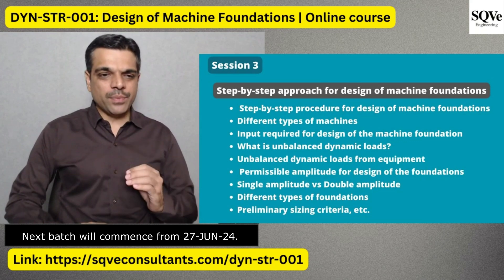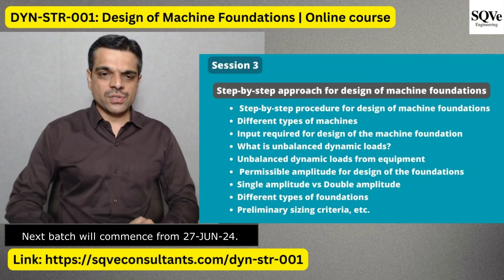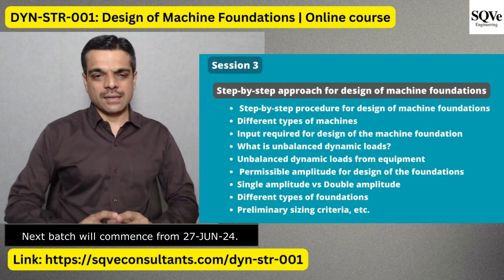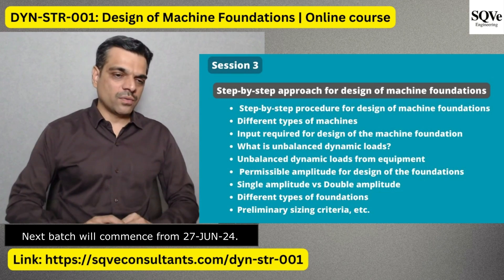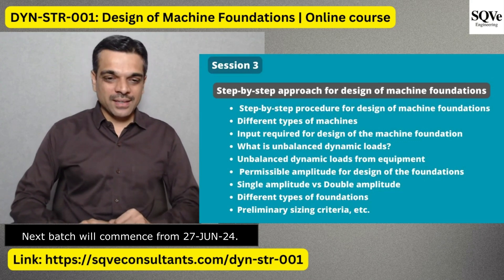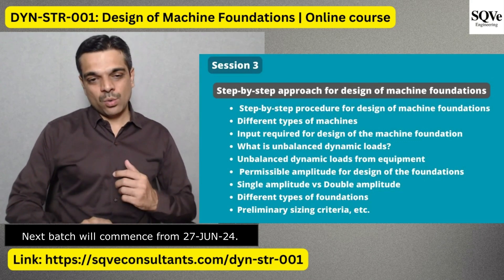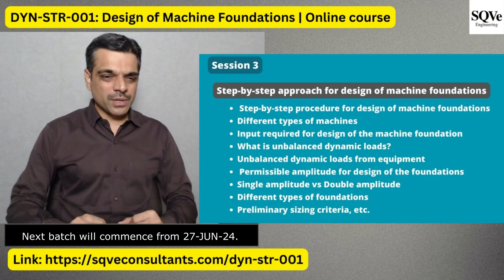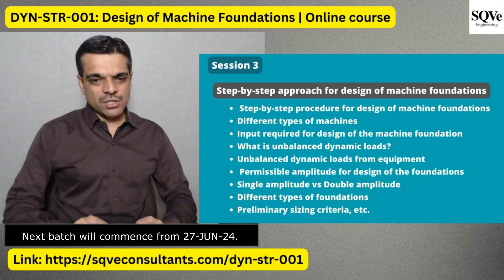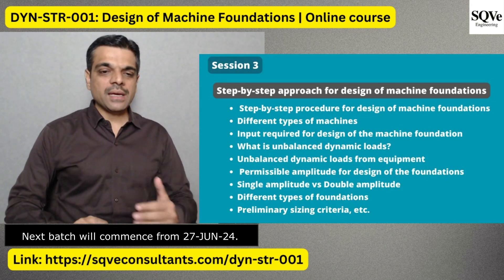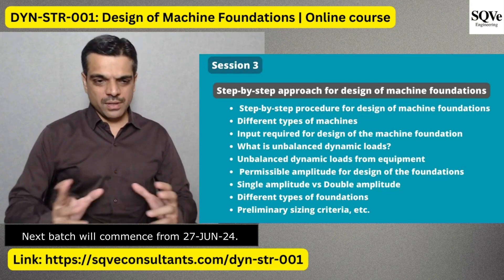Then we'll talk about a step-by-step approach for design of machine foundations, covering different types of machines like rotary machines and reciprocating machines. We'll discuss what general inputs are required from the manufacturer, what unbalanced dynamic loads are, and how these loads are generated from rotary and reciprocating equipment. We'll also cover permissible amplitudes — terms like single amplitude, peak amplitude, and double amplitude.